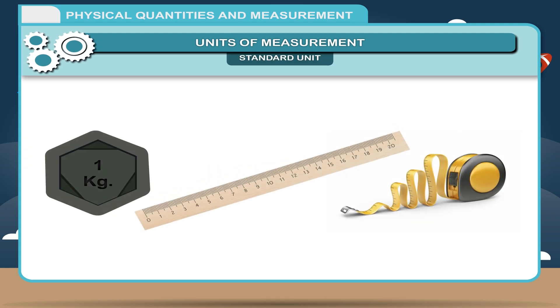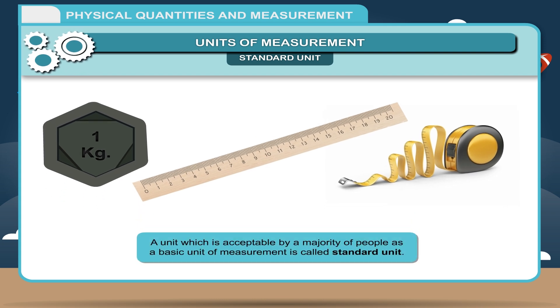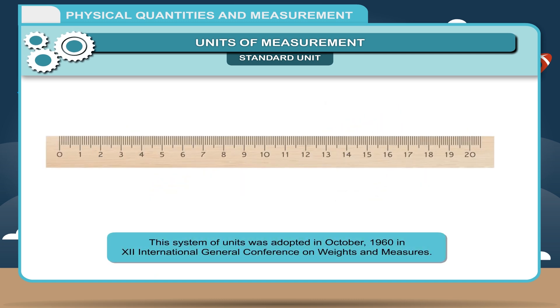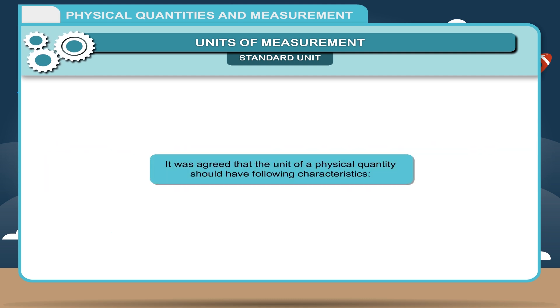Standard unit: To overcome variations in the measurement, the need of a system of standard units was felt. A unit which is acceptable by a majority of people as a basic unit of measurement is called standard unit. The internationally accepted system of units is called SI, Standard International Units. This system of units was adopted in October 1960 in 12th International General Conference on Weights and Measures.